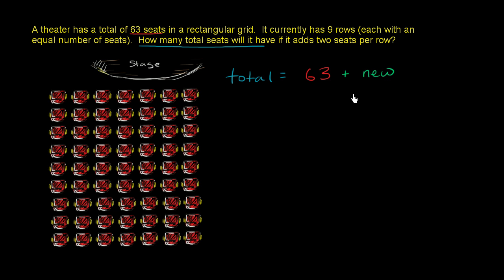Well, the new seats are going to be, I have nine rows, and I'm adding two seats per row. So the new seats are going to be nine rows times two seats per row. So we could say that the total is going to be equal to 63 plus 9 times 2.